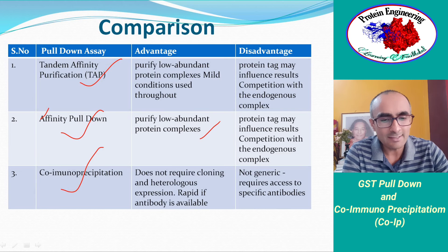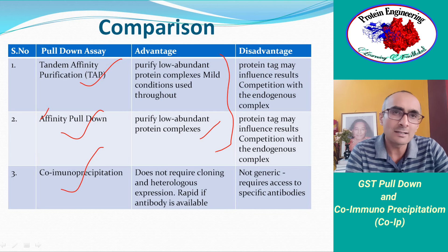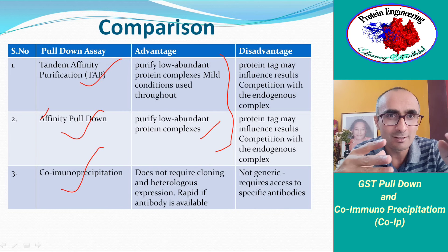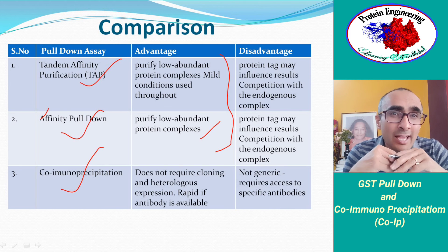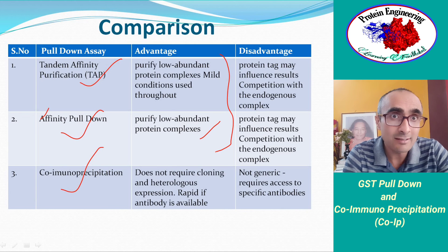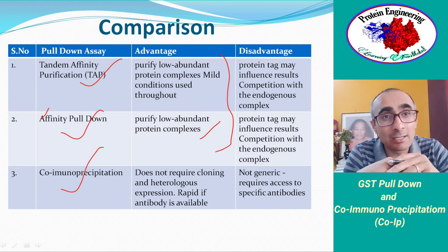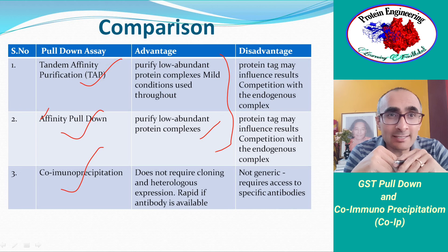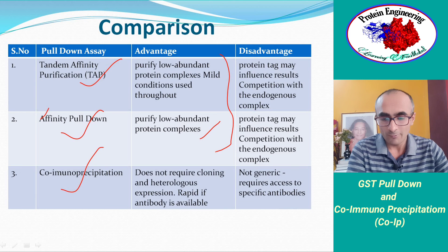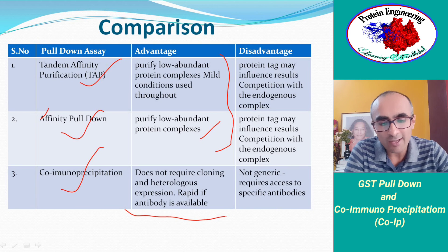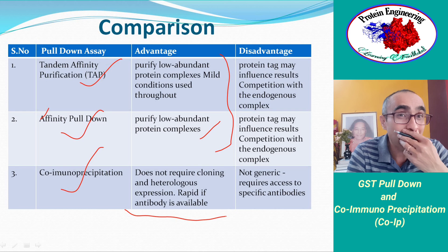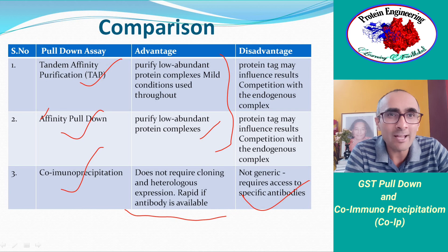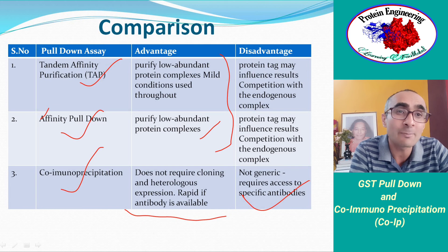Comparing the three types: TAP and affinity pull-down have the advantage of detecting very low amounts of complex, down to microgram quantities. Their disadvantage is that the tag-bait construct must be transformed into the host cell, and host cell proteins may interact with the tag, giving false positives — making control experiments essential. Co-immunoprecipitation does not require cloning or heterologous expression of the construct; however, it requires antibodies to be available. If antibodies are not available, co-immunoprecipitation cannot be performed.